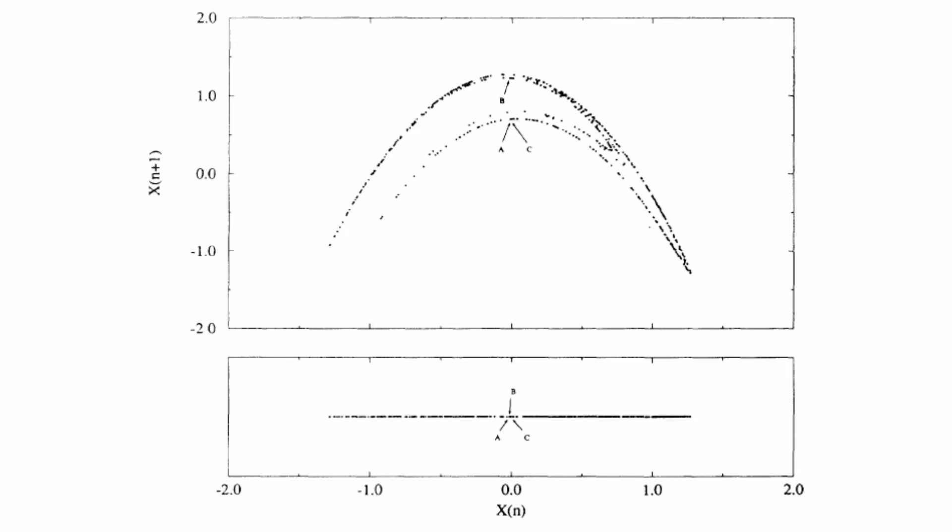Consider this figure. In the bottom pane of this figure, you have a one-dimensional embedding of the non-attractor. That is, you just have a time series of the non-attractor. As you can see, this attractor has been projected down onto a single line. Consider the points labeled a, b, and c.